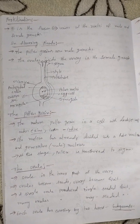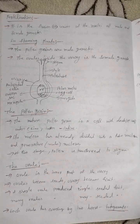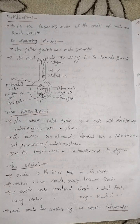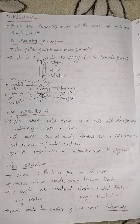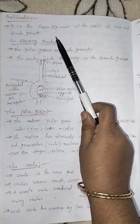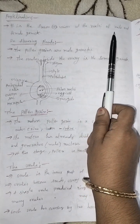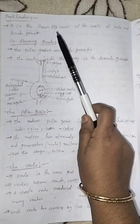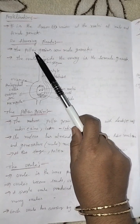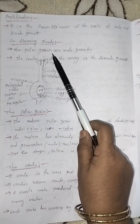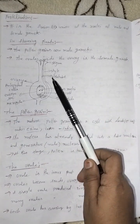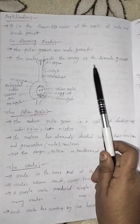Hello everyone, welcome to my channel Book of Science. Today I am teaching about ninth class biology, fifth chapter: pollination and fertilization. Fertilization is the fusion of the nuclei of male and female gametes. In flowering plants, the pollen grains are male gametes and the ovules inside the ovary are the female gametes.